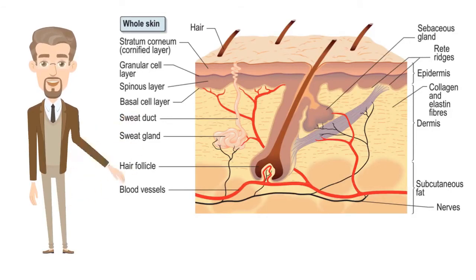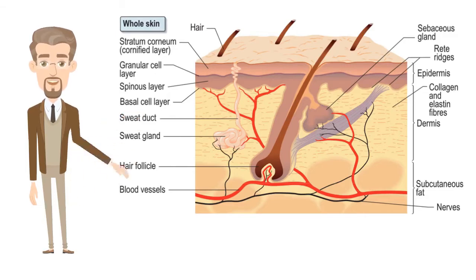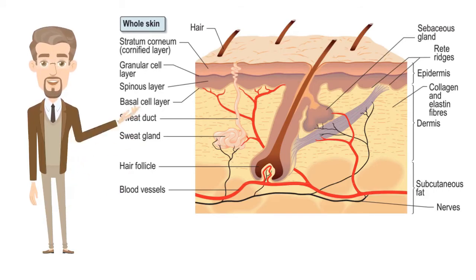The skin is divided into several layers. The epidermis is composed mainly of keratinocytes. Beneath the epidermis is the basement membrane, also known as the dermoepidermal junction. This narrow, multilayered structure anchors the epidermis to the dermis. The layer below the dermis, the hypodermis, consists largely of fat.